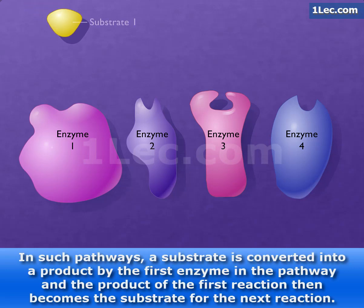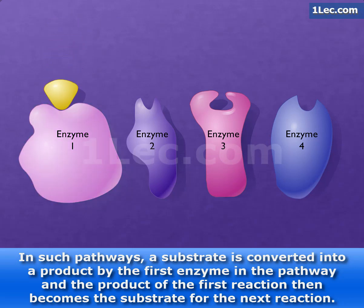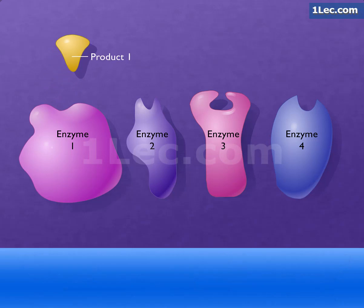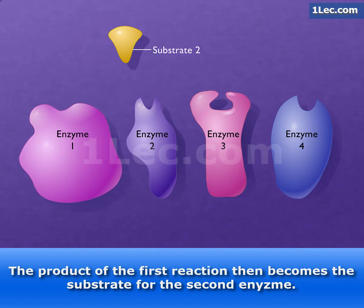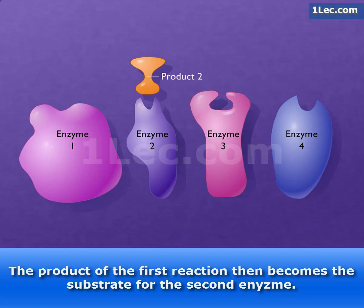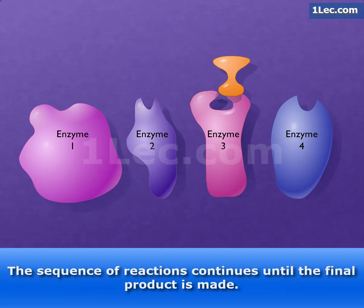In such pathways, a substrate is converted into a product by the first enzyme in the pathway, and the product of that reaction then becomes the substrate for the next enzyme. The sequence of reactions continues until the final product is made.